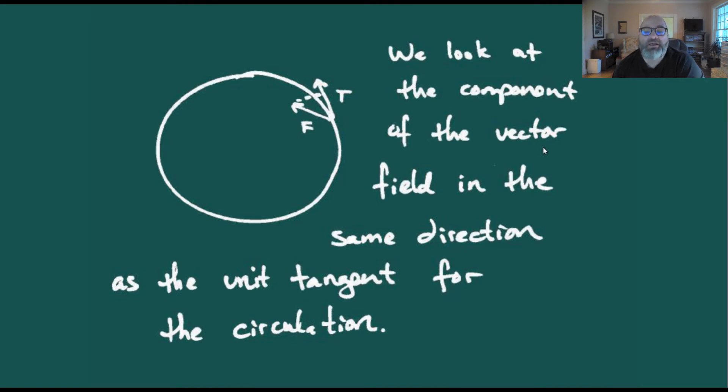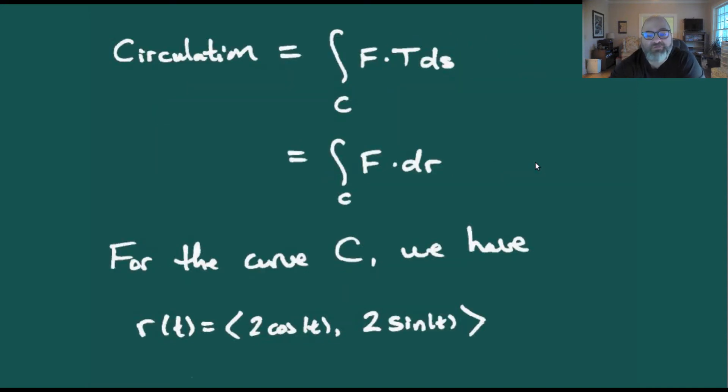Now we're looking at the component of the vector field in the same direction as the unit tangent. We're looking for this projection here as opposed to the flux integral when we're looking at the projection into the normal. So really those are just the flip sides of the same coin.